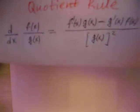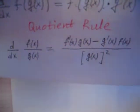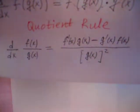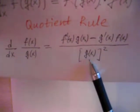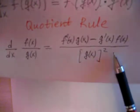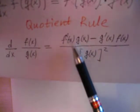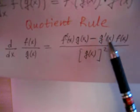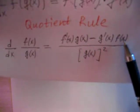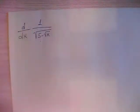We have a formula for the quotient rule: d/dx of f(x) over g(x) equals, in the denominator, g(x) squared, and in the numerator, f'(x) times g(x) minus g'(x) times f(x).